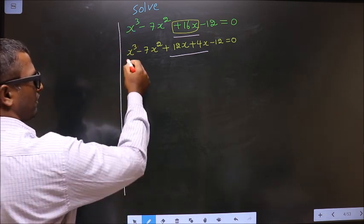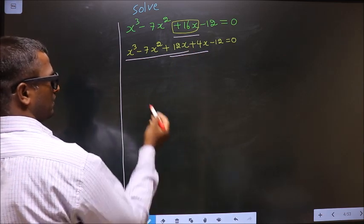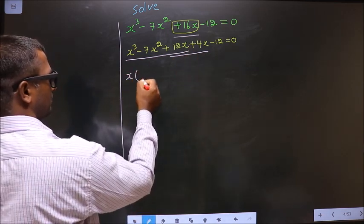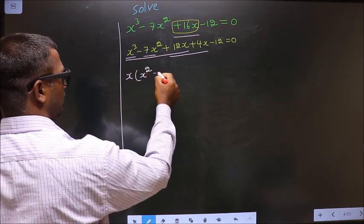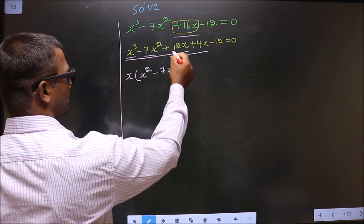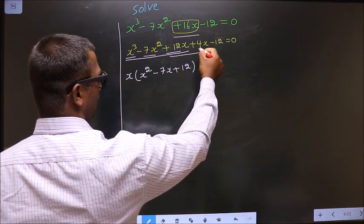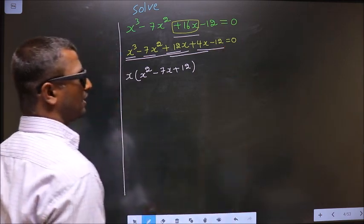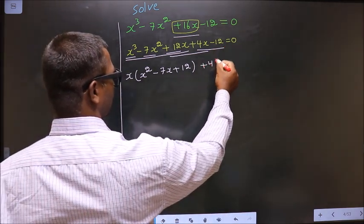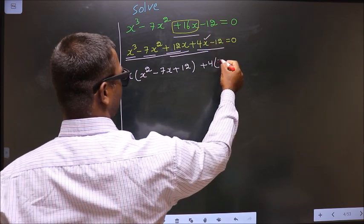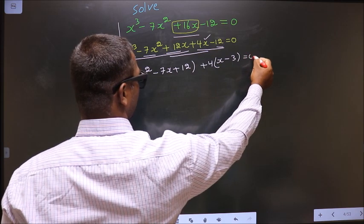Now, from these 3 terms, what you can take out common is x. So here you get x squared, here you get minus 7x, and here plus 12. Now, from these 2 terms, what you can take out common is plus 4. So here you have x and here you get minus 3, equal to 0.